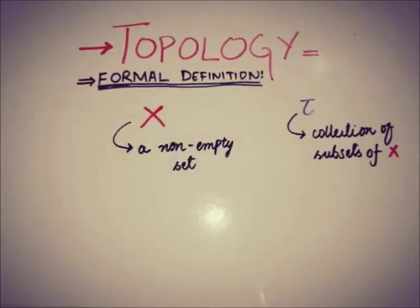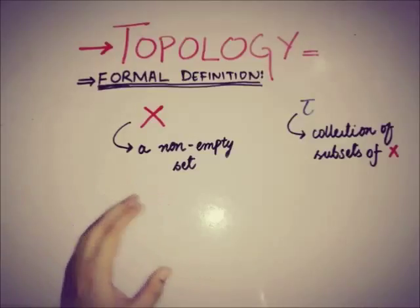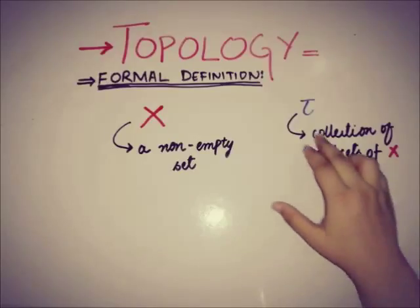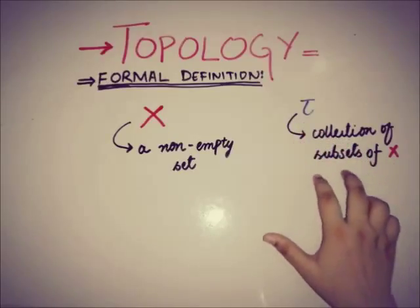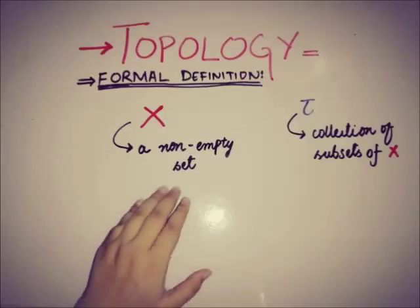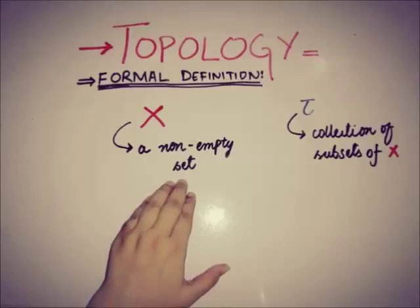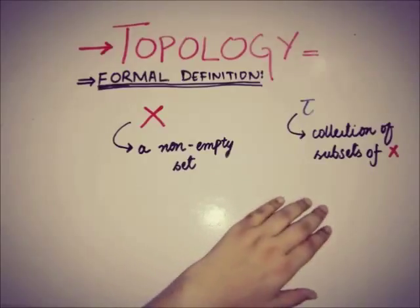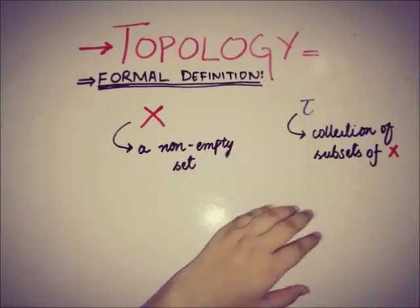The definition of topology in mathematics comprises two main things. The first is X, a non-empty set, and the second is tau, which is a collection of subsets of X. So X is a non-empty set, and a collection of subsets of X is tau.